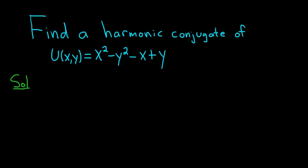So to find a harmonic conjugate of u is the same thing as saying that we need a function v such that f equals u plus iv is analytic. That's precisely what it means to find a harmonic conjugate of u. In other words, we have to find a function v